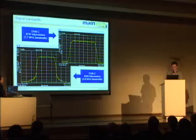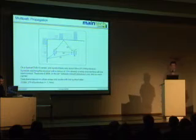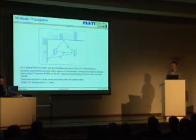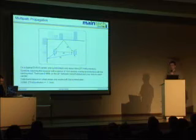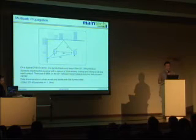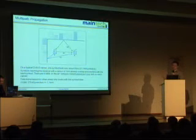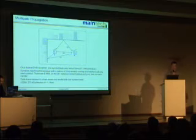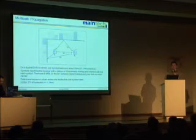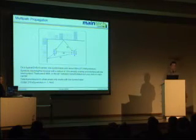Why can't we use that modulation for DVB-T? In an urban area, you have reflections — your signal is reflected at houses, hills, whatever is in your city. What you're receiving is not an exact copy of the transmitted signal, but multiple copies with multiple different time delays. That's a problem, because on a typical DVB-S carrier, one symbol lasts only 30 nanoseconds at 27.5 mega symbols per second. Symbols arriving with a detour of only 10 meters already overlap and interfere with the next symbol.